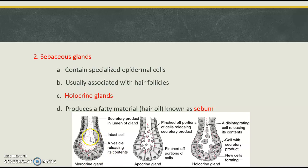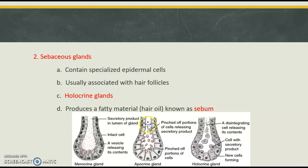Looking at merocrine, we can see these red dots — that's what is being secreted. In the case of merocrine glands, the contents being secreted is produced by cells and goes straight into the ductwork of the gland, which then goes outward. With apocrine, we can see chunks of the cell enclosing the red dots, being pinched off of these cells into the ductwork, and as these are pushed upwards, the little vesicles containing the secretions start to break down, releasing the secretions.